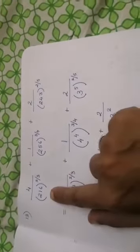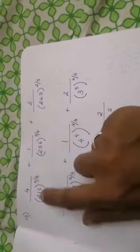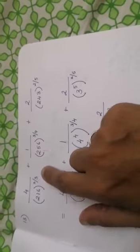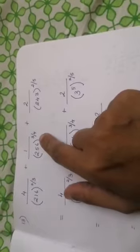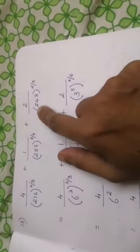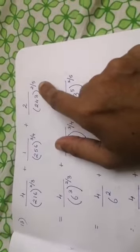Now, I will explain how to solve the 13th question. It is given as 4 by 216 raised to the power 2 by 3, 1 by 256 raised to the power 3 by 4 plus 2 by 243 raised to the power 2 by 5.